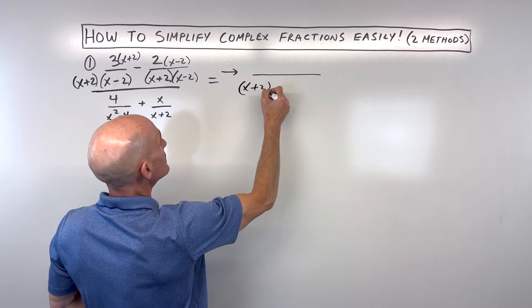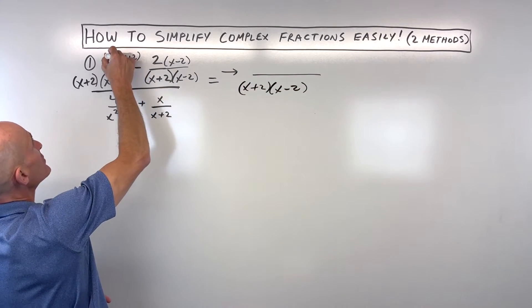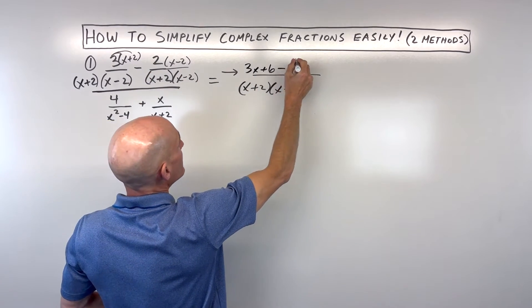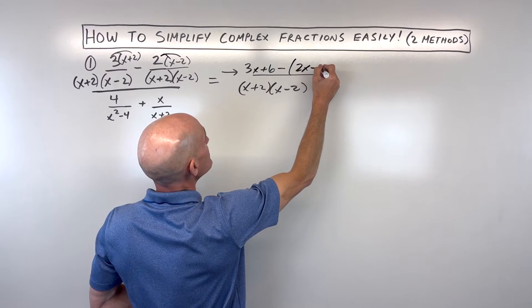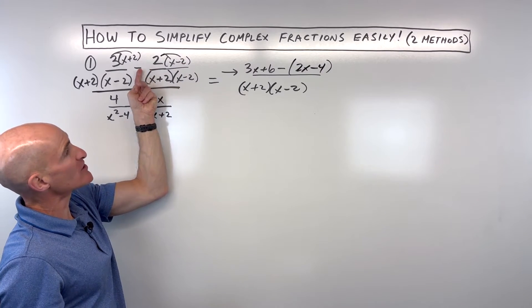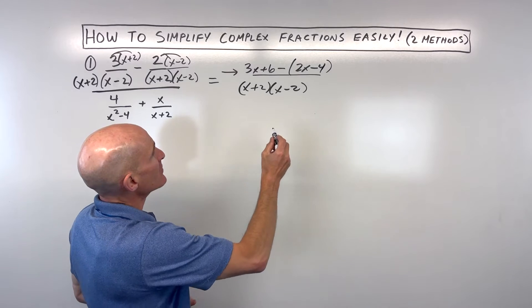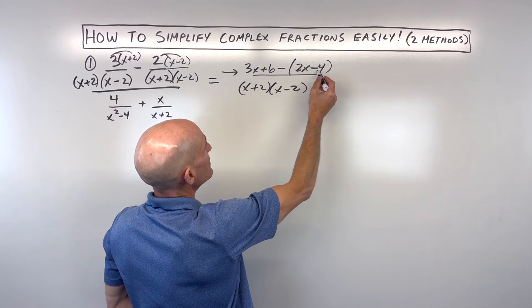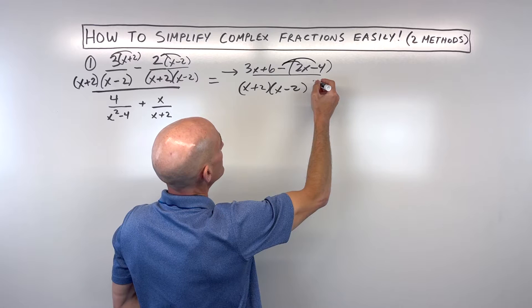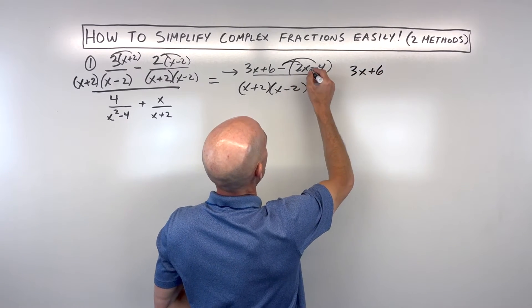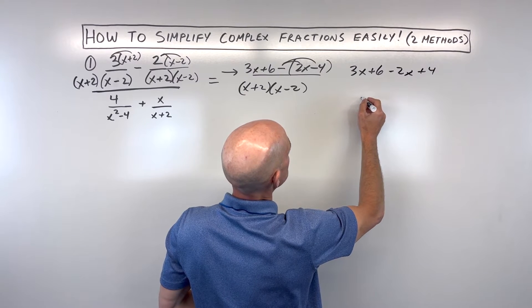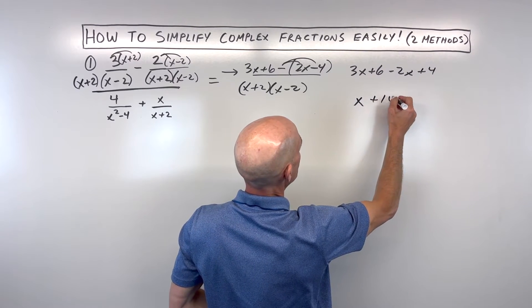But the numerator I'm going to distribute. We get three x plus six minus the quantity two x minus four. Now here's where students sometimes go a little bit off track — they forget to put the parentheses around this whole quantity. See how we're subtracting? You want to subtract that whole group. So if you don't do that, you're going to have negative two x, but then this will have the wrong sign. So let's distribute: that gives us negative two x plus four. So we have three x plus six minus two x plus four, and that simplifies to x plus ten in the numerator.